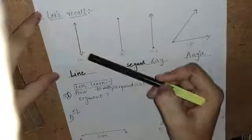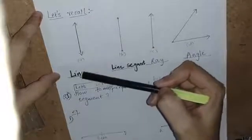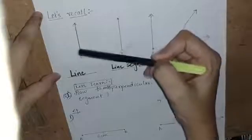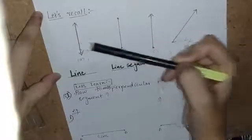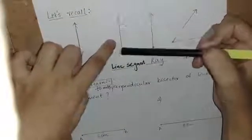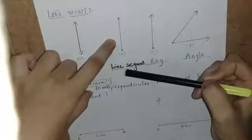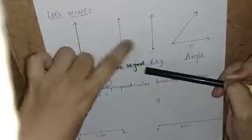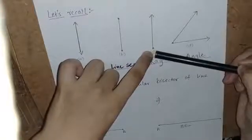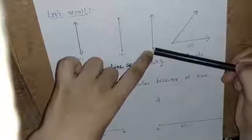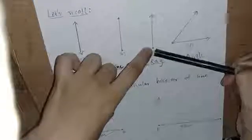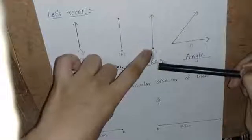Figure A is called a line. Why? Because it has two arrow heads. If these two arrow heads are not there, then this will be called a line segment — meaning it has two end points. And if it has only one arrow head and at the other end it has a point, meaning one end point and one arrow head, then it will be called a ray.